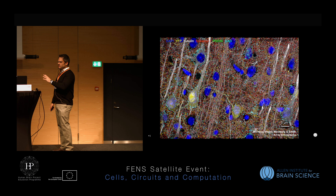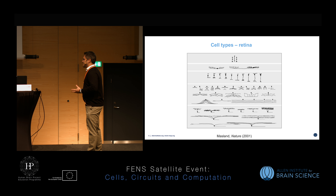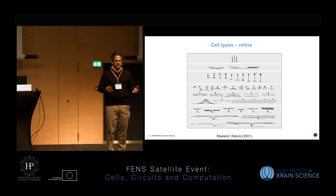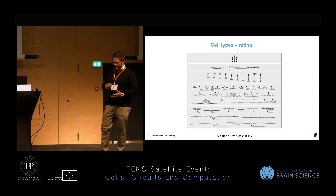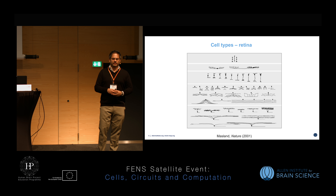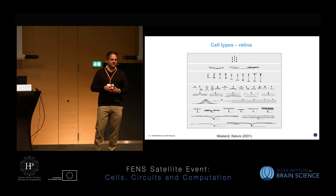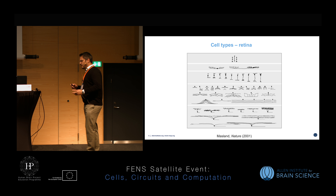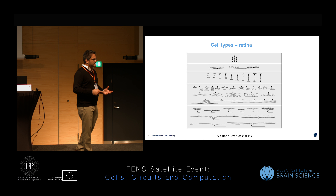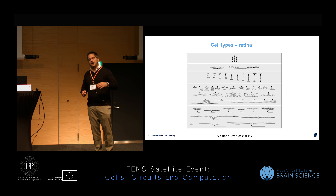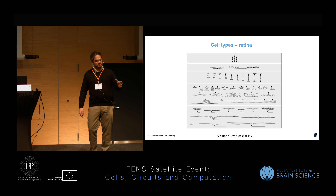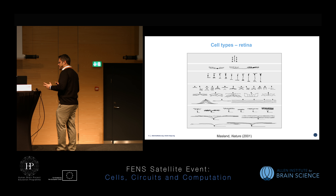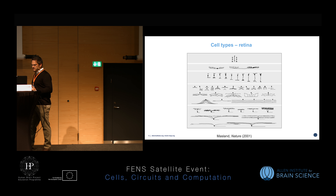Brain matter is extremely complex, but there are examples where we have been able to produce cell type libraries that are very accurate and meaningful. One of those examples — probably the only one with regard to the CNS — is the retina. In the retina, we know exactly the number of cell types and the different cells that form the circuits. To some extent, we have a high level of accuracy in predicting what circuits do.